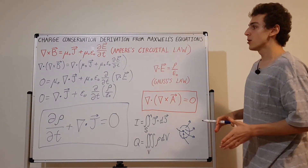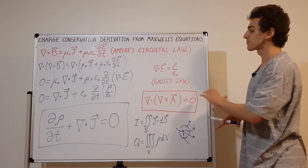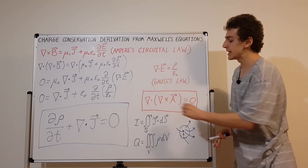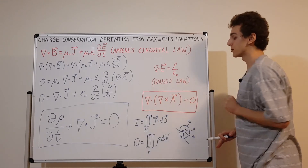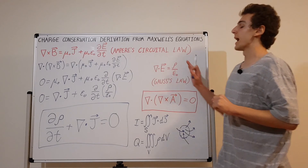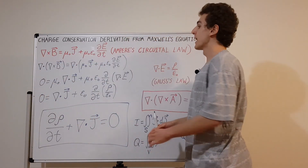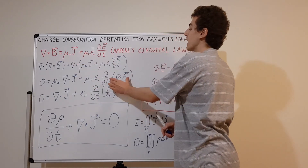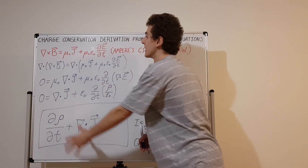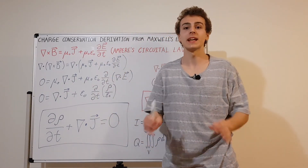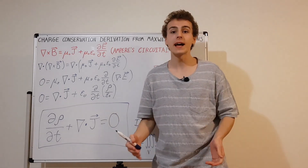In summary: we started from Ampere's circuital law and Gauss's law — two of Maxwell's equations — combined them, and used the vector identity that the divergence of the curl of any vector field equals zero. Taking the divergence of Ampere's law, setting the left side to zero, distributing, substituting Gauss's law, and canceling epsilon-nought gave us charge conservation: the partial derivative of rho with respect to time plus the divergence of J equals zero. Charge in a closed system is invariant — this is analogous to conservation of mass in fluid mechanics.